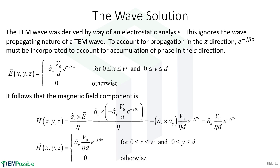We want to learn more about our waveguide, so we need to keep solving for things. The next logical step is to solve for the magnetic field. We substitute our electric field answer into Faraday's law, or equivalently use the wave impedance expression. We plug in our expression for E, turn the crank, and find that the magnetic field is constant and points in the X direction — parallel to the parallel plate waveguide — with the same e to the minus j beta Z propagation factor.